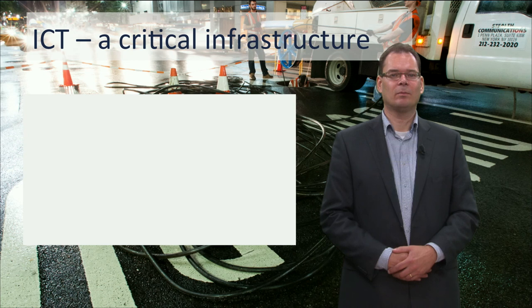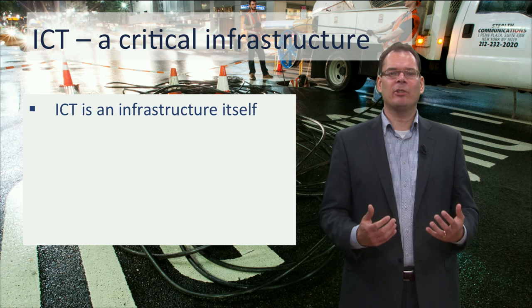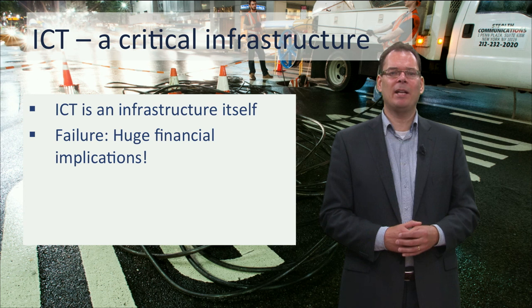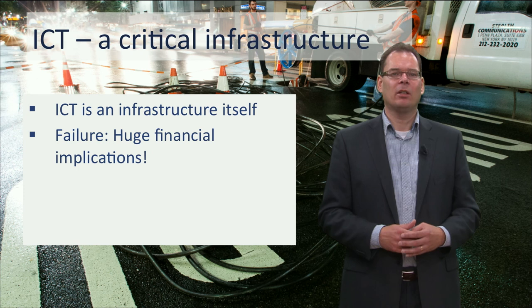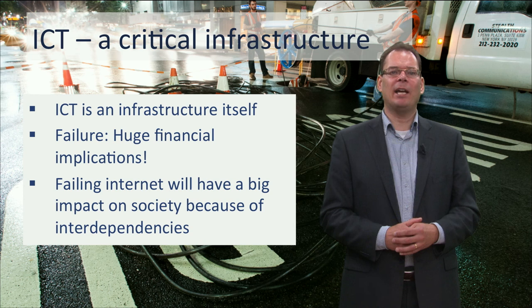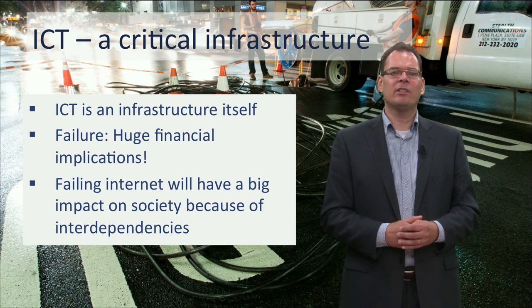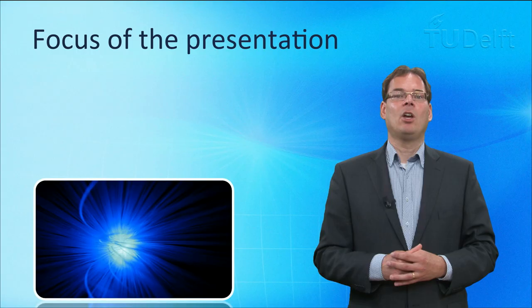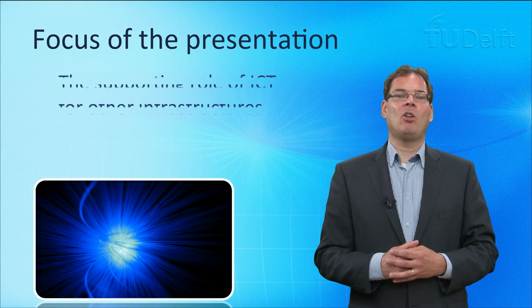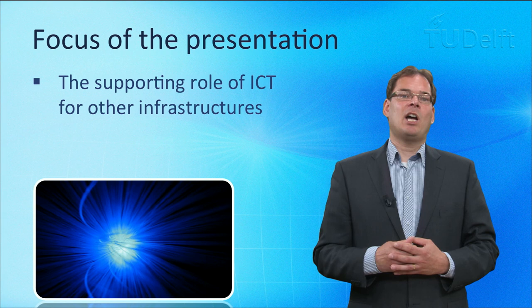The use of the term infrastructure might be confusing, as IT is a critical infrastructure in itself. There are some calculations that show that more than 50 billion euros a day will be lost if the internet fails. This is shocking. The dependencies between infrastructures are becoming so high that due to the failure of the ICT infrastructures, other infrastructures like water and energy might fail. We don't know if those calculations are correct, but it is easy to imagine that the failing internet will have a huge impact. The focus of this lecture is on the role of ICT for supporting other infrastructures, and I will use the example of a smart grid for clarification.